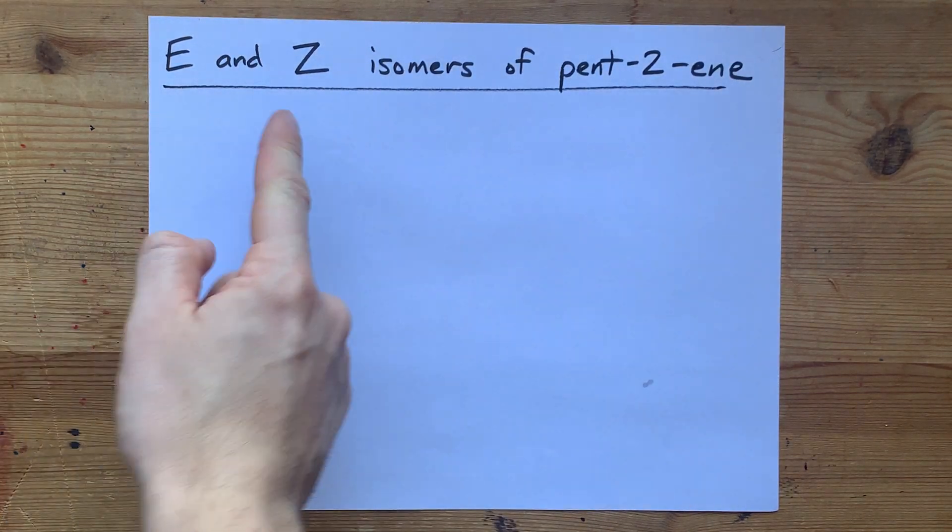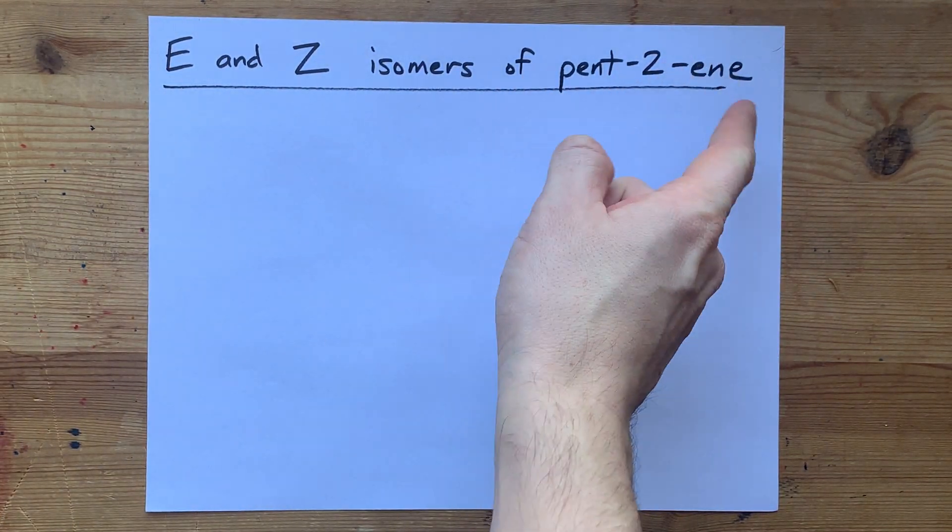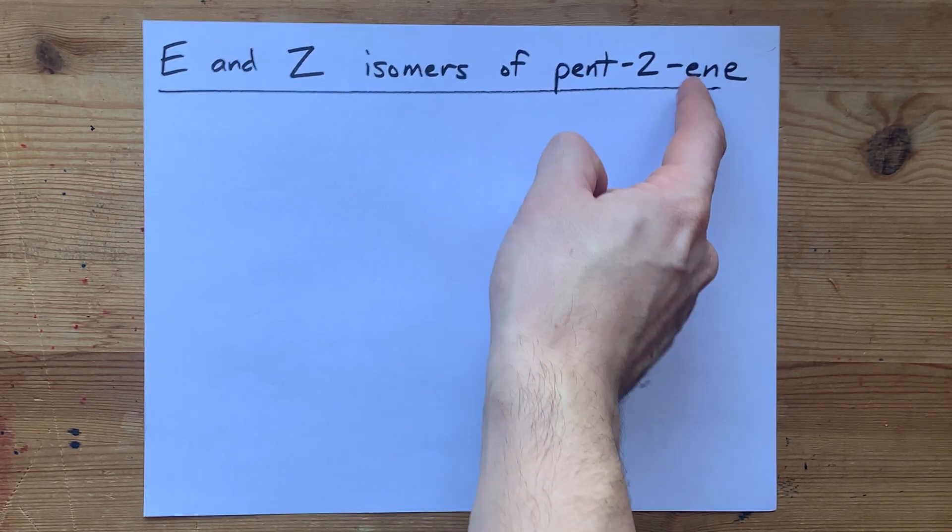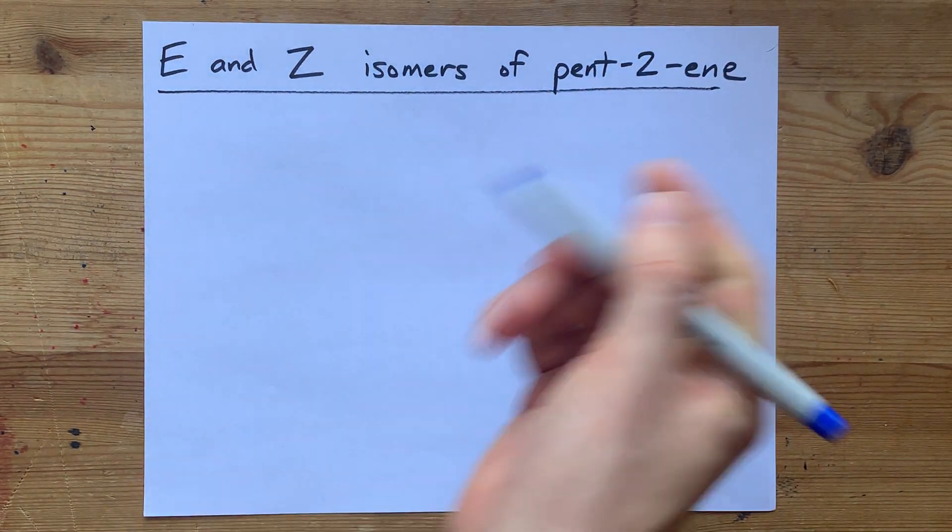We are going to draw the E and Z isomers of pent-2-ene. You already know that this is a five-carbon chain with a double bond starting at carbon-2.